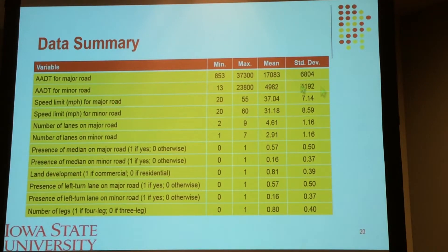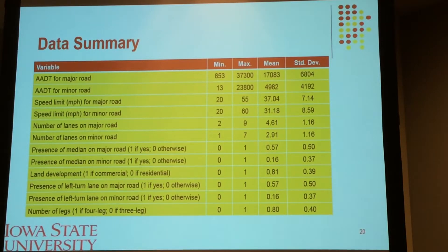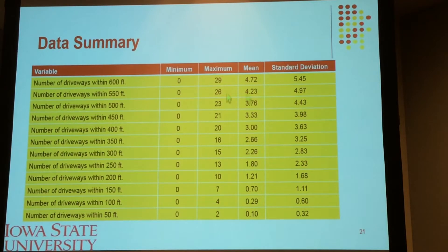This is the summary data for all the predictor variables plus number of crashes. As you can see, most of the variables here we have for both major and minor road. These roads were determined based on the number of AADT — whichever road has higher AADT is considered the major road, and the smaller one is the minor road. Both AADT on major and minor roads have a very large range, partly because about 19% of our intersections are located in residential areas. About 80% of our intersections are four-legged, and the rest are three-legged intersections. As you increase the buffer distance, the maximum number of driveways will also increase, as does the mean value of each predictor variable.